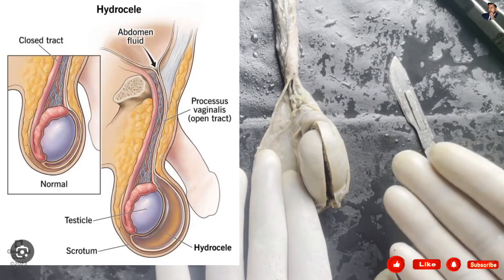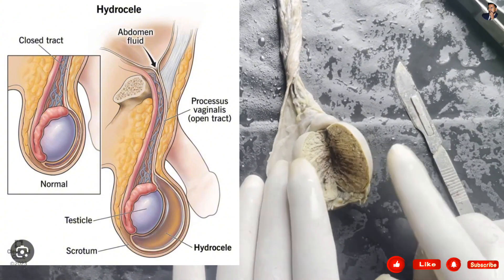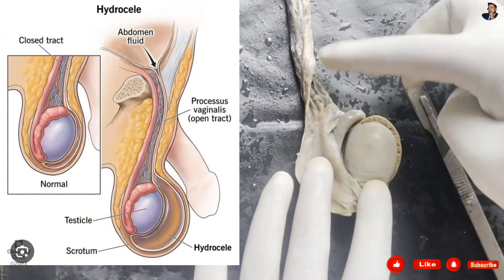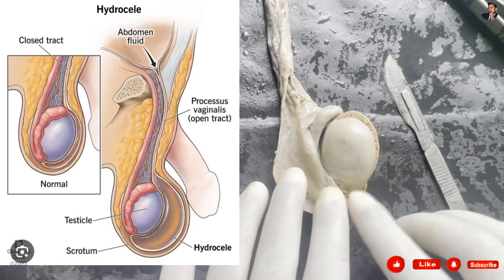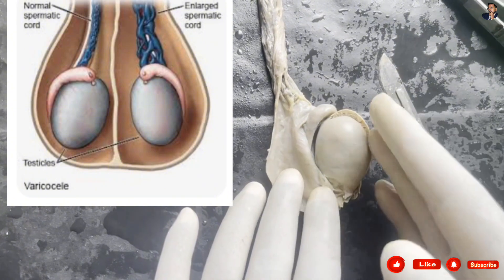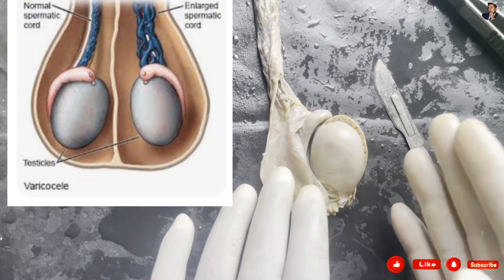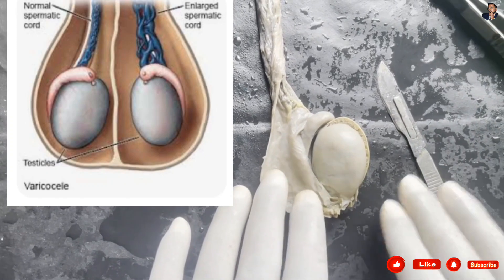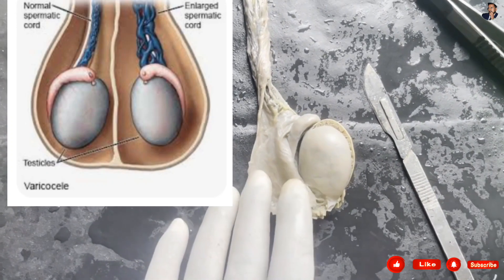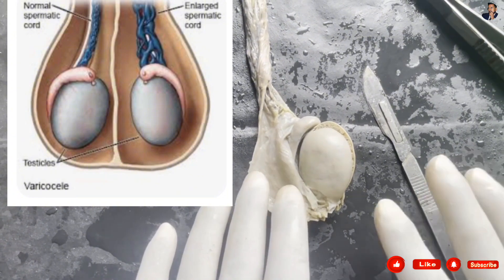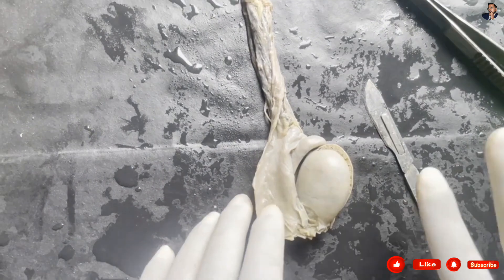Regarding clinical aspects: hydrocele is a fluid-filled sac present around the testis due to inflammation, seen as swelling of the scrotum. Varicocele is enlargement of the veins within the scrotum due to poor functioning of the valves; it can be a primary cause of infertility in males and is associated with low sperm count.